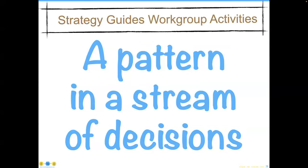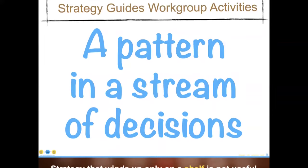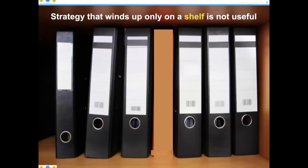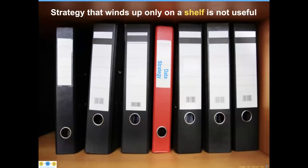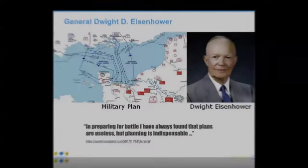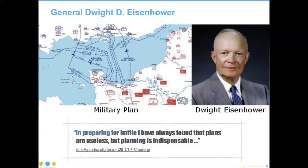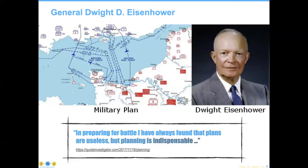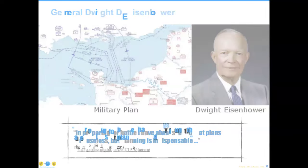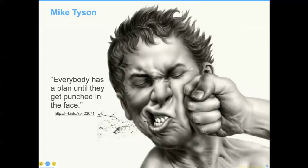These strategic decisions guide workgroup activities. One of the things that provides workgroup cohesion is being focused on a common goal. A strategy that winds up on a shelf is simply not useful. Dwight Eisenhower had a quote: in preparing for battle, I've always found that plans are useless, but planning is indispensable. Similarly, Mike Tyson rewrote General Eisenhower's quote a little bit and said, everybody has a plan until they get punched in the face.